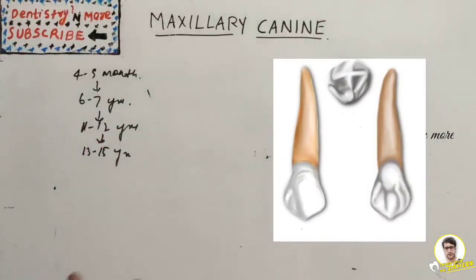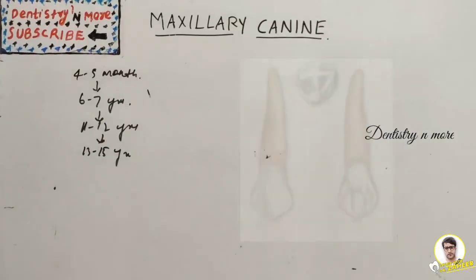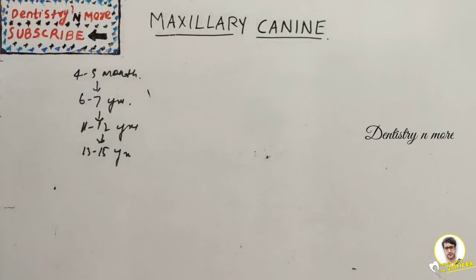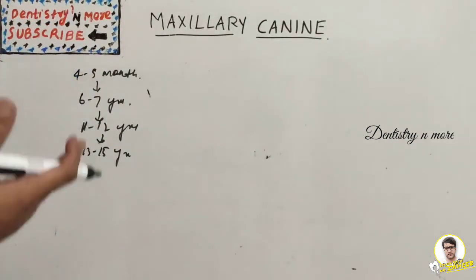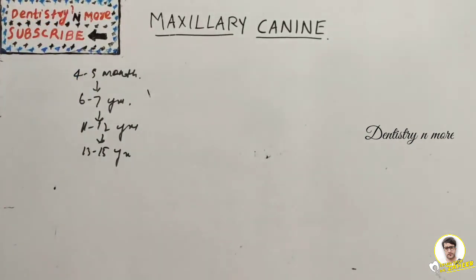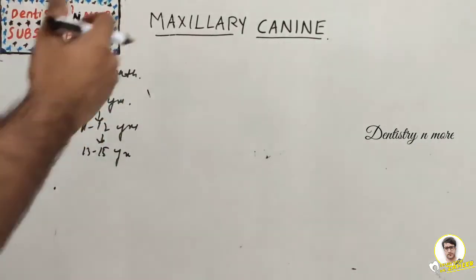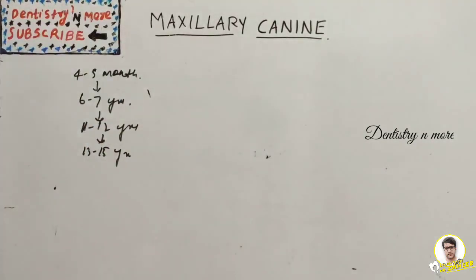That covers the maxillary canine, which is a very commonly asked essay question. As mentioned in previous sessions, you need to draw all aspects with measurements and explain point by point — covering the tooth numbering system, dimensions, chronology, and all five aspects with pictures. The next session will be on the mandibular canine.